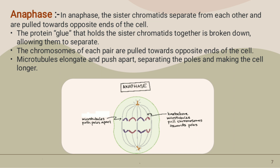In Anaphase, the sister chromatids separate from each other and are pulled towards opposite ends of the cell. The protein glue that holds the sister chromatids together is broken down, allowing them to separate. Microtubules elongate and push apart, separating the poles and making the cell longer.